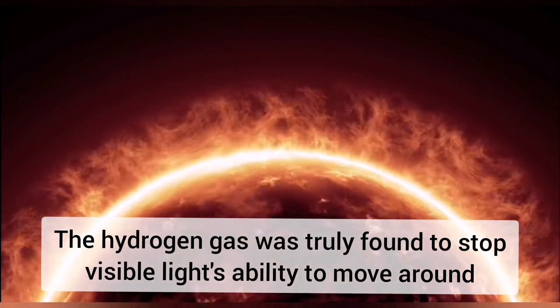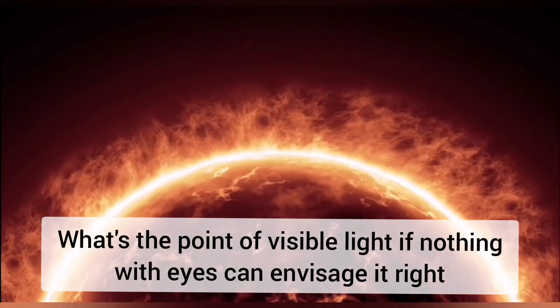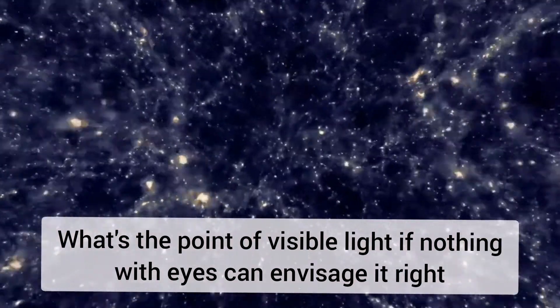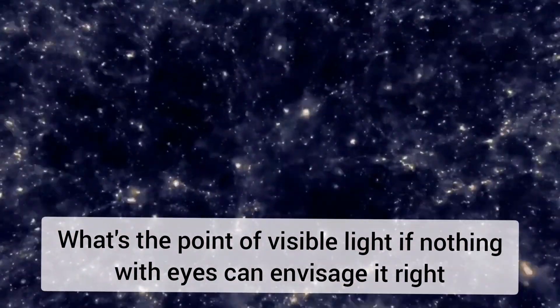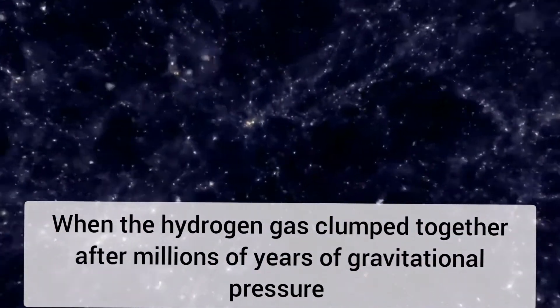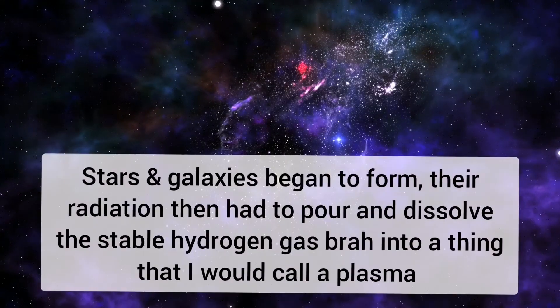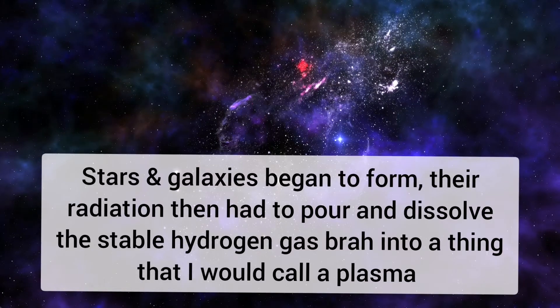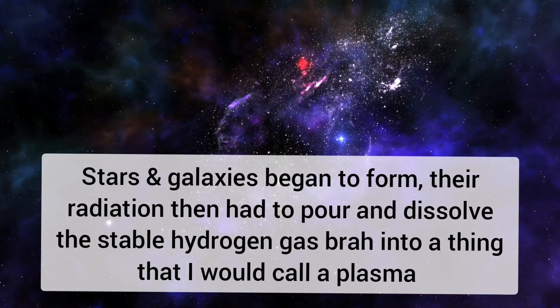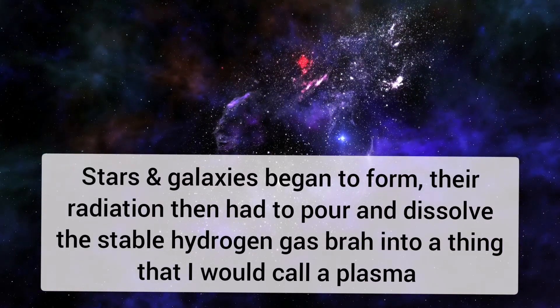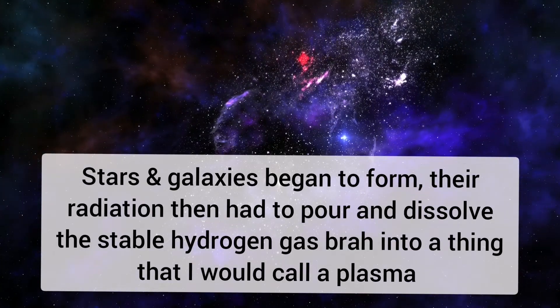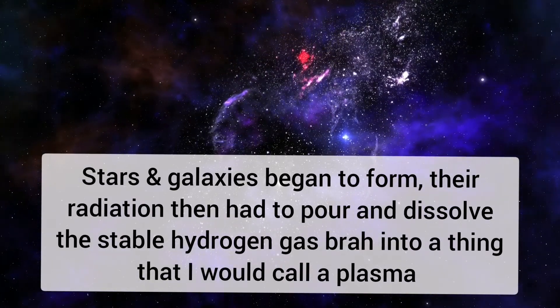The hydrogen gas was truly found to stop visible light's ability to move around. What's the point of visible light if nothing with eyes can envisage it right? When the hydrogen gas bumped together after millions of years of gravitational pressure, stars and galaxies began to form. Their radiation then had to pour and dissolved stable hydrogen gas into a thing that I would call a plasma.